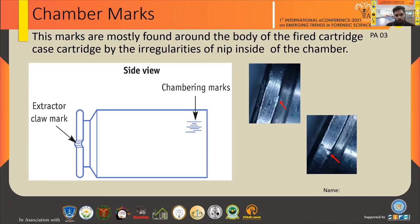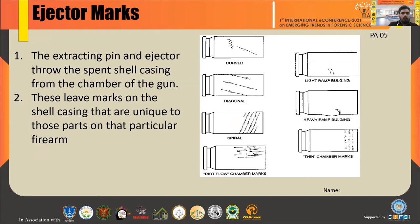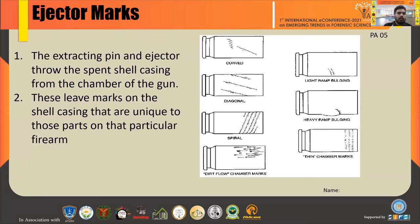Moving to the next slide: ejector marks. These are also a type of chamber mark. Sometimes the ejector pins can make marks such as spiral, heavy ramp, rolling, right rambling, curved, and drift flow chamber marks, and sometimes it cracks or makes some deep indentation marks. The ejector pin throws the spent shell casing from the chamber of the gun.